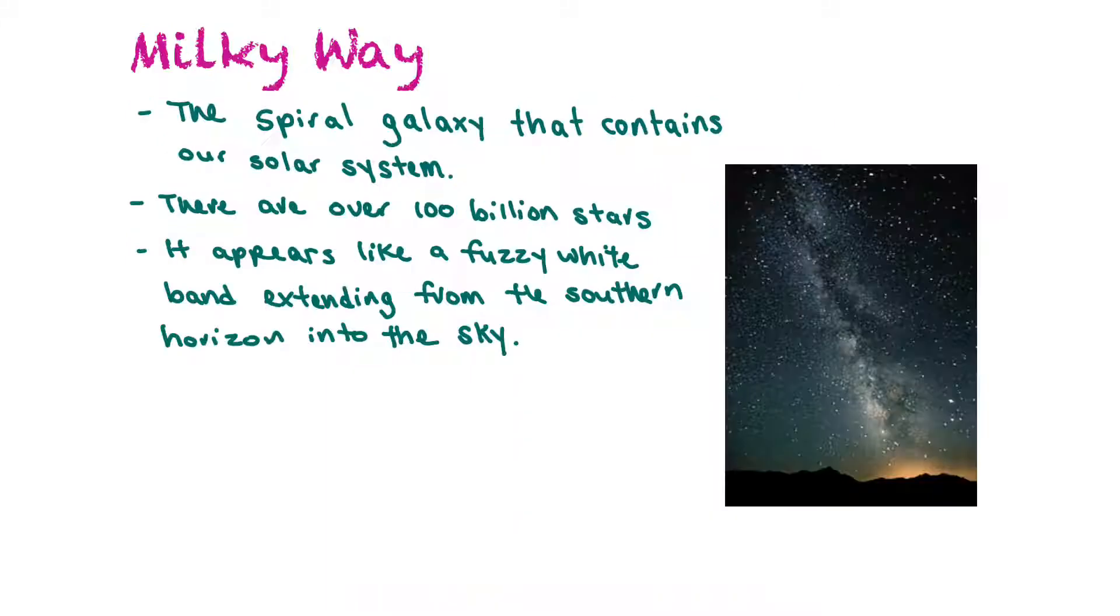The Milky Way is the spiral galaxy that contains our solar system. Within the Milky Way, there are over 100 billion stars and it appears like a fuzzy white band extending from the southern horizon into the sky. The Greeks named our galaxy the Milky Way because they believed that the milky appearance was milk that Hera spilled when she was feeding Hercules.